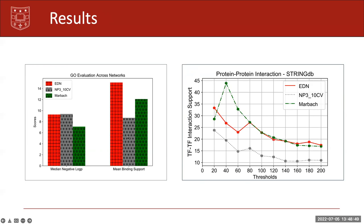We also check for mean binding support for the genes that overlap with the most significant GO term across TFs. The goal of this evaluation is to check if the most significant p-value for the TF is partly due to indirect targets of TFs. We find that EDN is more likely to have the most significant p-value resulting from direct functional targets of TFs compared to MARBACH and NP 310CV due to its relatively high mean binding support.